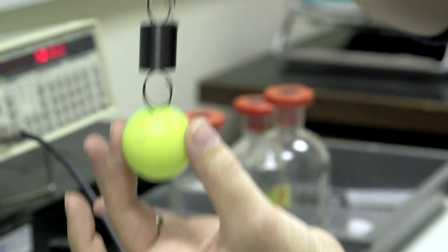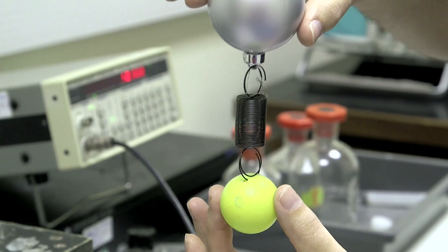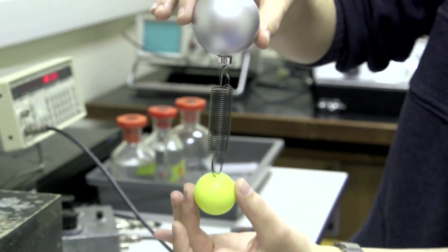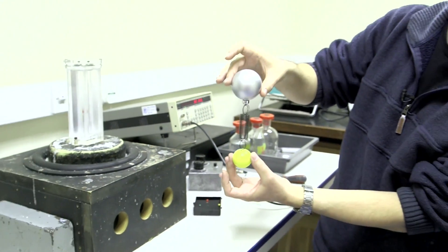So although the whole thing is neutrally buoyant, the sphere at the top is being pulled up and the sphere at the bottom is being pulled down. So that spring is being stretched.